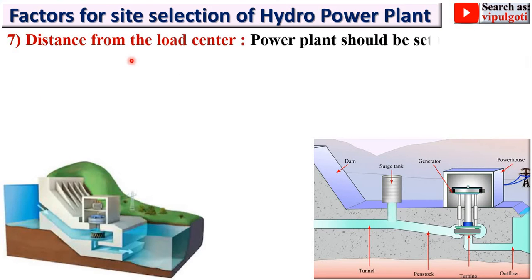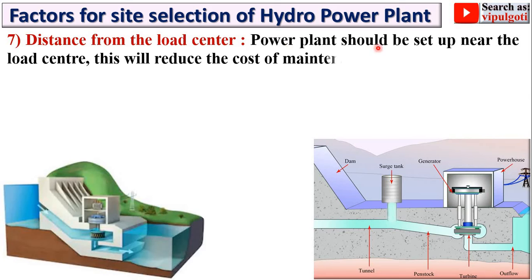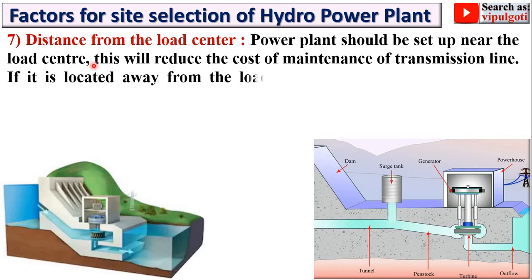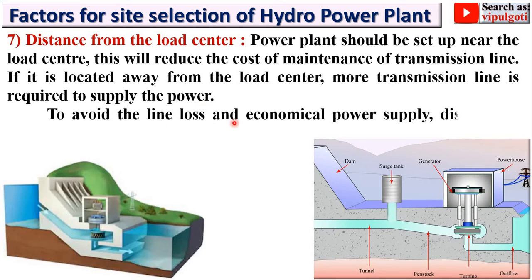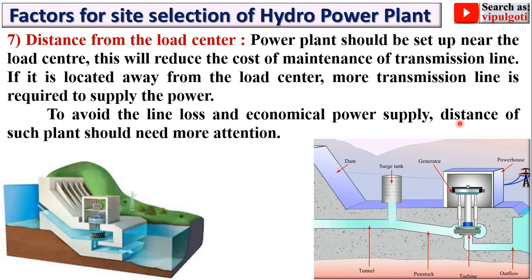The next point is distance from the load center. The power plant should be set up near the load center, which will reduce the cost of maintenance of the transmission line. If the plant is located away from the load center, more transmission line is required to supply power. To avoid line loss and ensure economical power supply, the distance of such a plant needs careful attention.